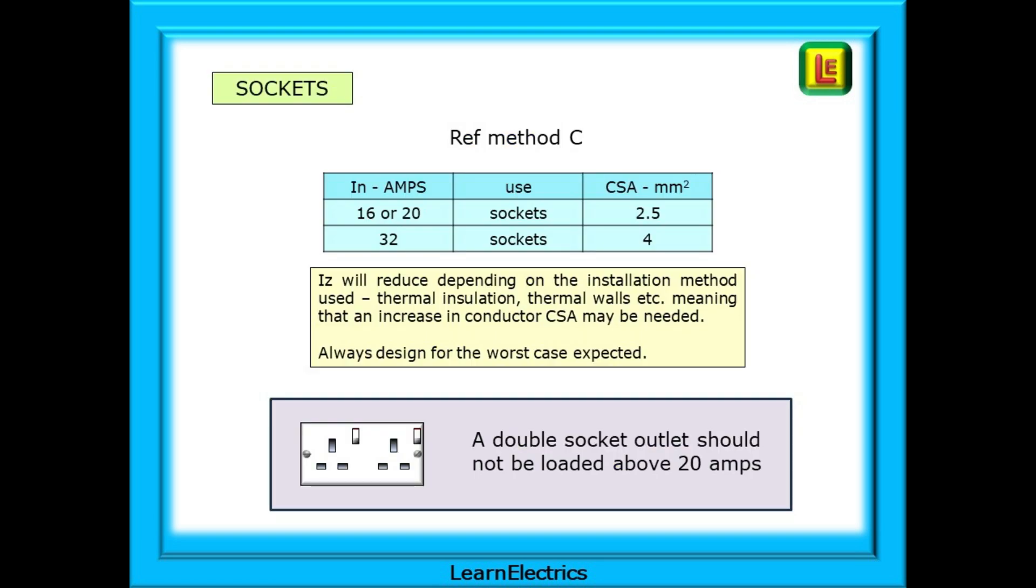We can look at sockets now. This is what we are asked many times. Can I add sockets? Can I add lights? There are usually two cable sizes of interest to us, 2.5mm² and 4mm². 2.5 cable can be protected by either a 16-amp or a 20-amp breaker, with 4mm cable being protected by a 32-amp breaker. This is for reference method C, clipped direct, and IZ, the cable's current carrying capacity, will reduce depending on the installation method used, thermal insulation, thermal walls, etc., meaning that an increase in conductor CSA may be needed in some circumstances. We should always design for the worst case expected. If the worst case is a safe circuit, then anything else is going to be safe too. And also remember that the regulations recommend that a double socket outlet should not be loaded above 20 amps.